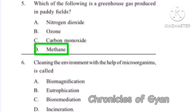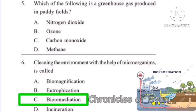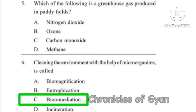Question 6: Cleaning the environment with the help of microorganisms is called? The correct answer is bioremediation, that is Option C. It uses microorganisms to degrade organic contaminants in soil, groundwater, sludge, and solids.